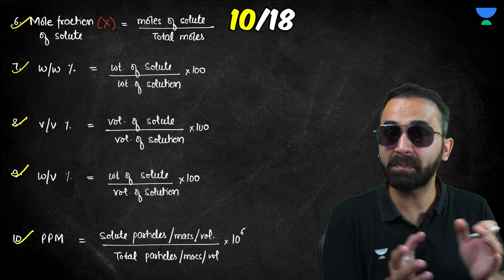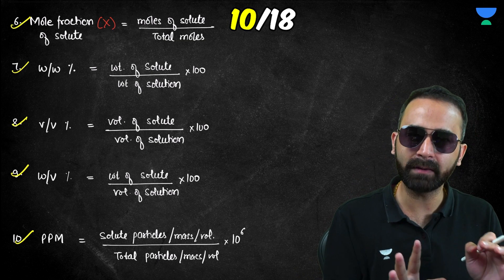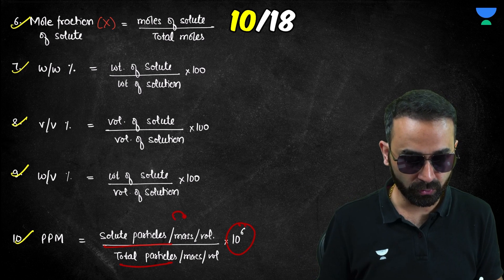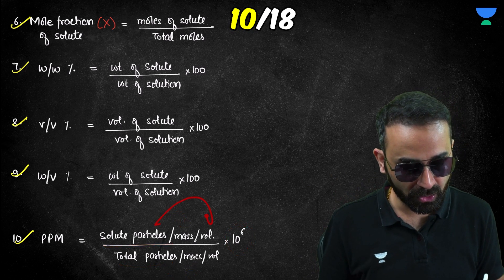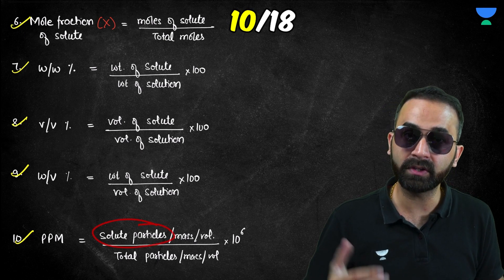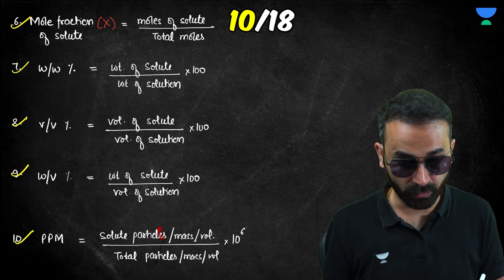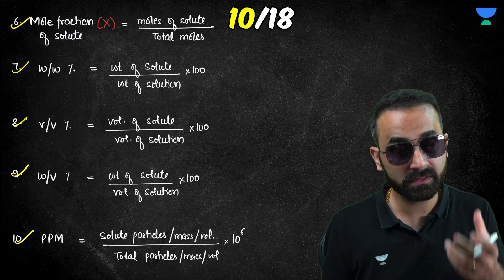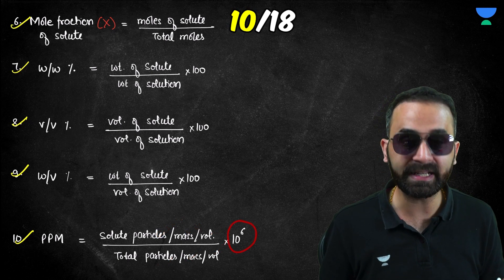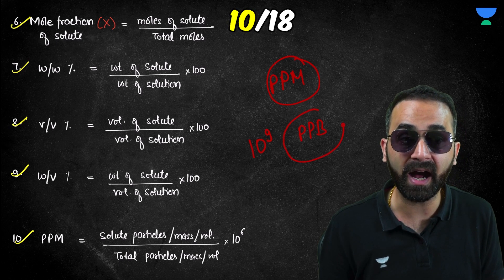Formula ten is PPM — parts per million. It can be calculated as solute particles divided by total particles, or solute mass divided by total mass, or solute volume divided by total volume — all multiplied by 10⁶. The key rule is that whatever unit you use in the numerator, you must use the same in the denominator, since PPM has no units. Multiplying by 10⁹ instead gives PPB, parts per billion, though that is less commonly used.